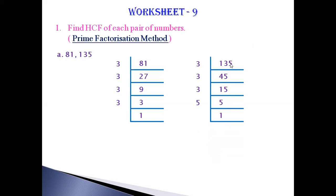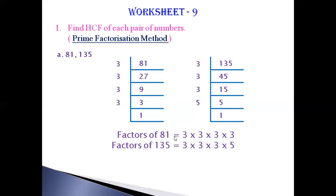Now, 135. Here also the number is an odd number, so it is not divisible by the two table. I have selected the three table. 135 divided by 3 gives 45. Then 45 divided by 3 gives 15. 15 divided by 3 gives 5. Here we are getting 5, so we select the five table. 5 divided by 5 gives 1.